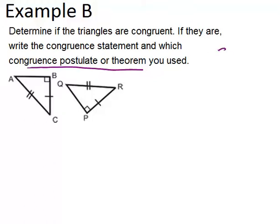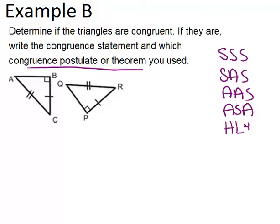The other ones you've probably learned are SSS, SAS, AAS, and ASA. HL is the special one that only works for right triangles. So if we look at this picture,